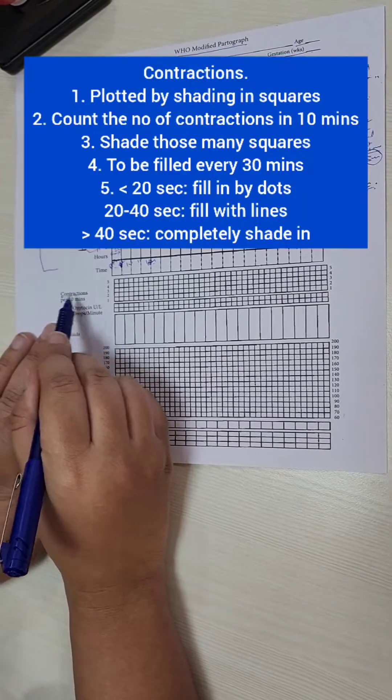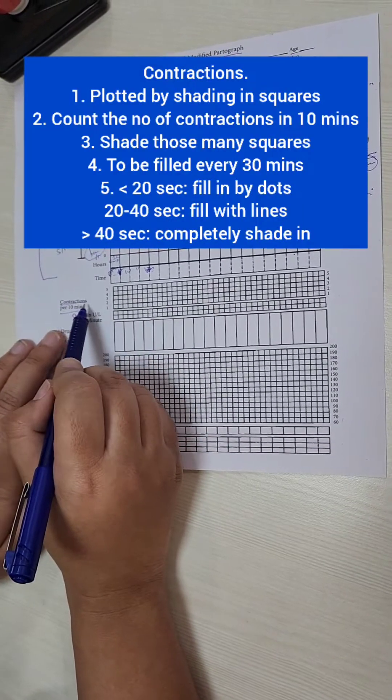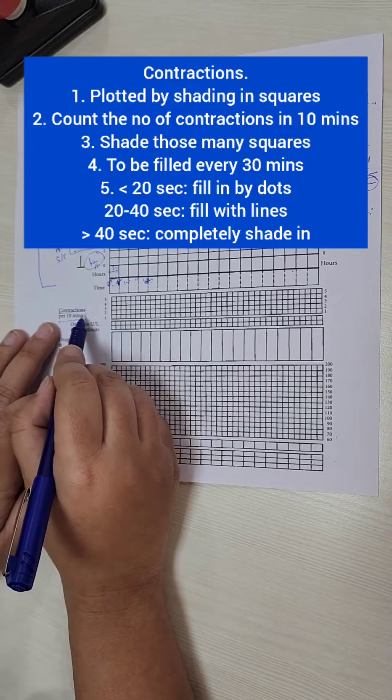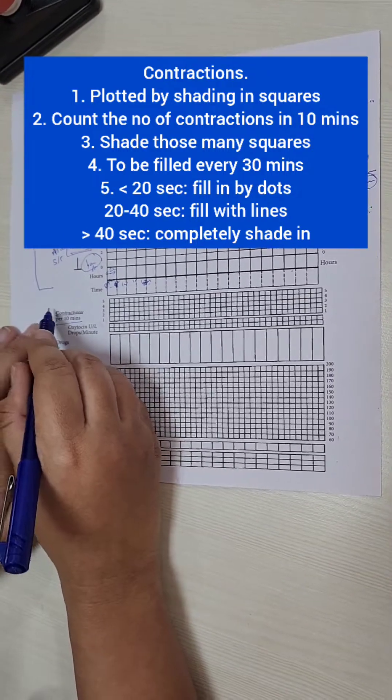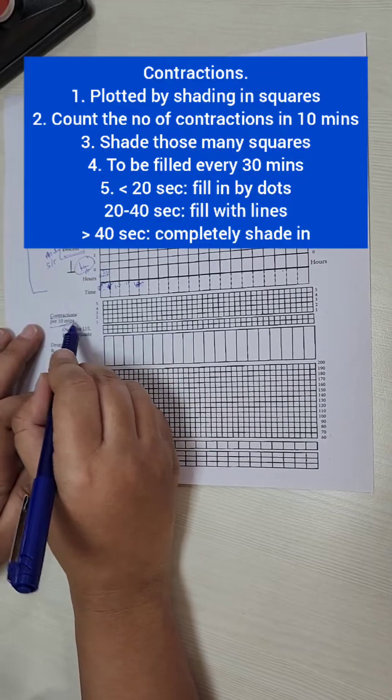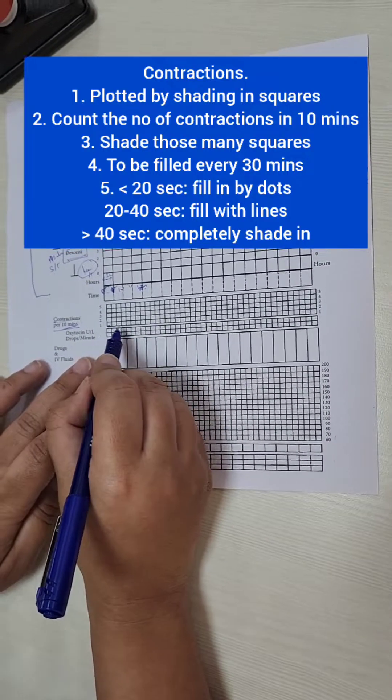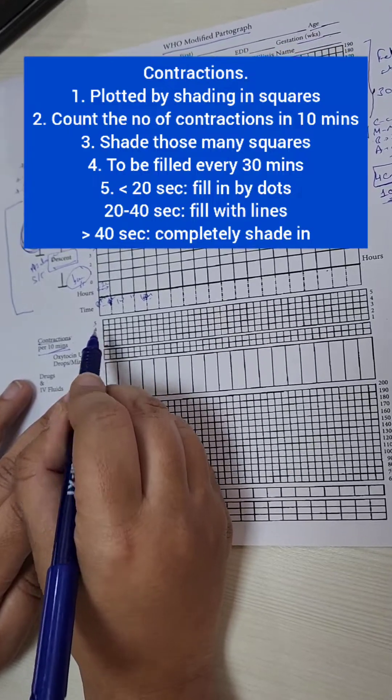Next we have the column for contractions. So here we can see that the contractions are plotted based on the frequency and the intensity in a 10 minute period. So you can see every half an hour again we check for contractions. You can see 1, 2, 3, 4, 5.